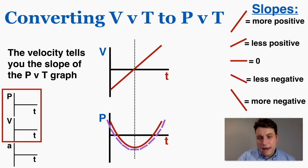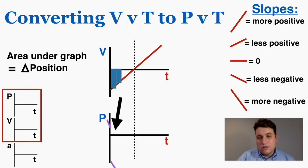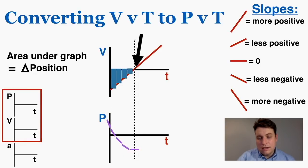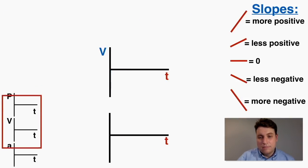You can also use the fact that the area under the curve equals the change in position. This one would start with a very negative change in position, then get to a smaller and smaller change in position until the position isn't changing, and then get larger and larger. I honestly still prefer the tangent line trick for this, but you can use the area method as well.